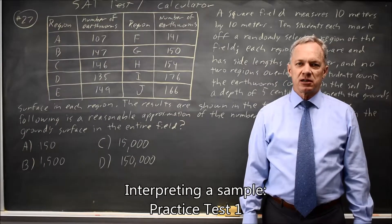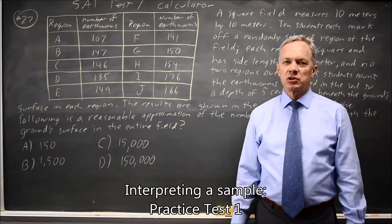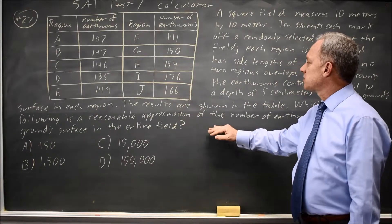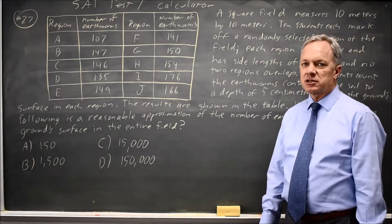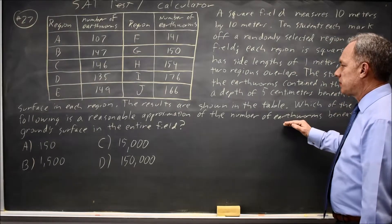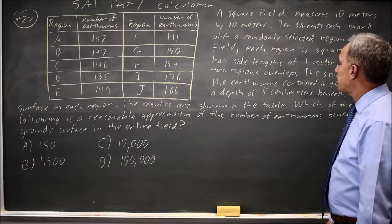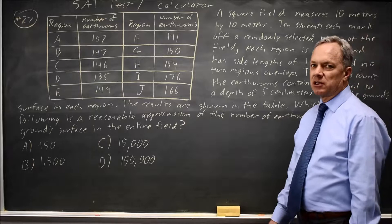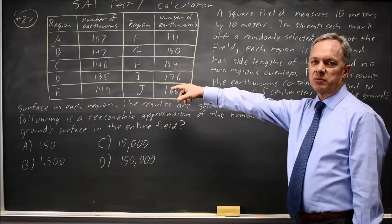This is SAT test 1, calculator question number 27. College Board gives us data in a table and asks us to interpret the data and answer approximately how many earthworms is a reasonable estimate for the entire 10 meter by 10 meter field, where these are samples of 1 meter squares.